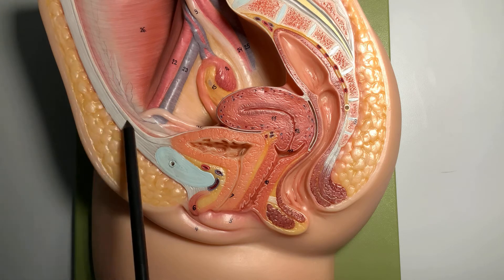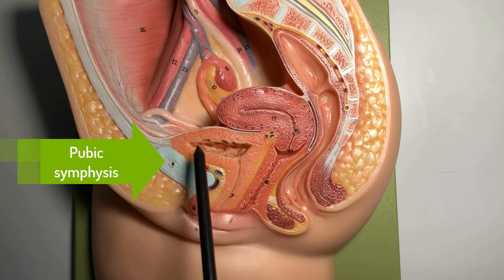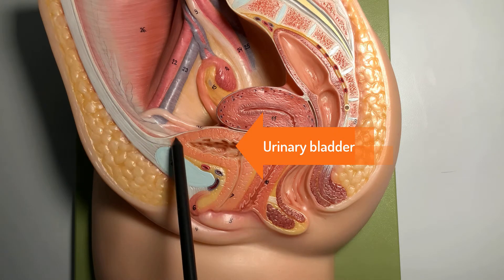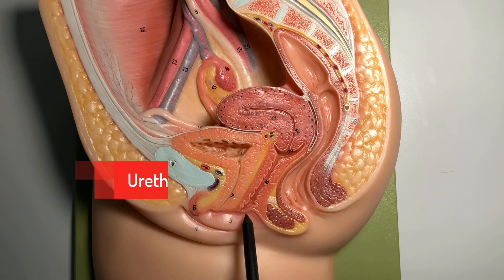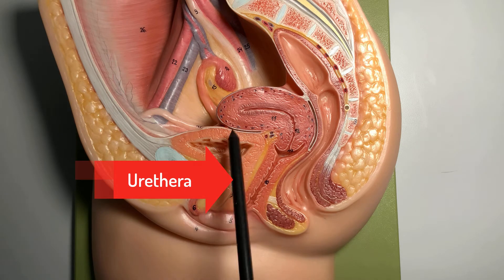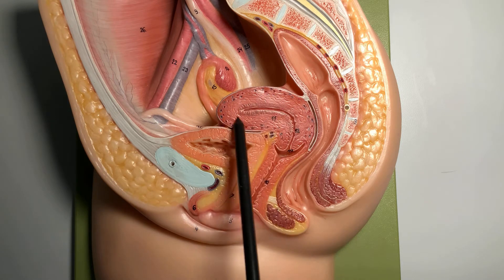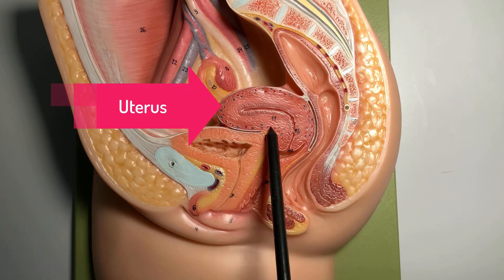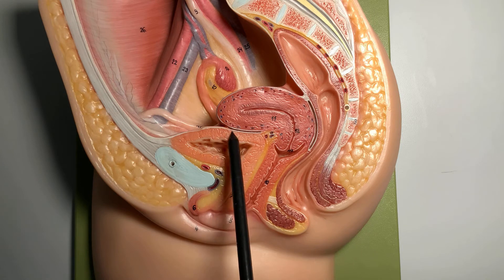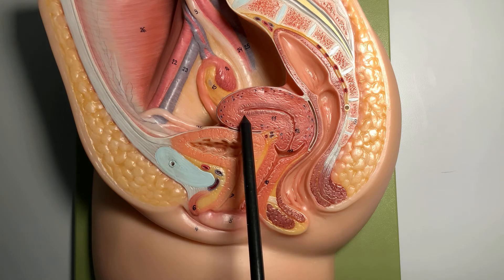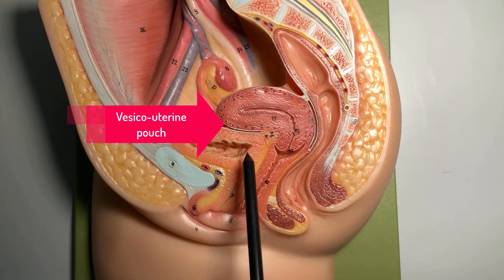Now we can see the organization of the urinary bladder in a female model. This is the pubic symphysis at the front, and this is the urinary bladder with its detrusor muscle and cavity. This is the ureter which opens into it. On the superior surface of the urinary bladder we have an ovoid structure — that is the uterus — and there is a slit-like space between the urinary bladder and the uterus called the vesico-uterine pouch.